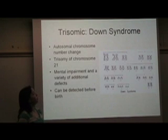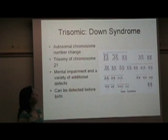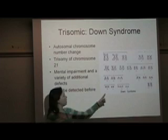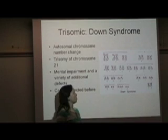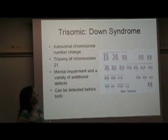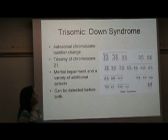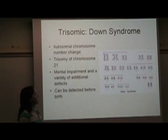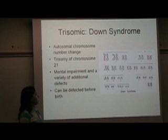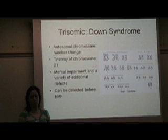One example of a trisomic condition is Down syndrome, and this is when an individual has three copies of chromosome 21. This is showing three copies of chromosome 21. Individuals with Down syndrome have some sort of mental impairment, usually some sort of physical impairment as well, and Down syndrome can be detected before birth.